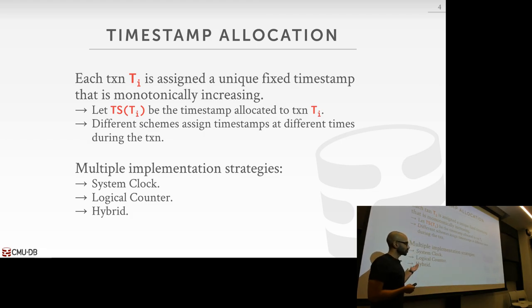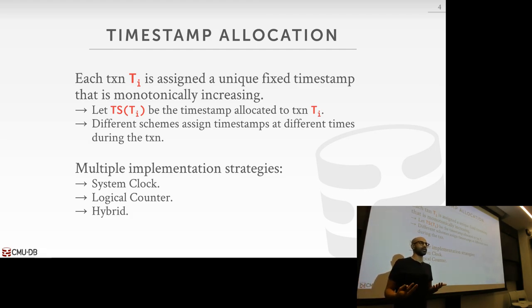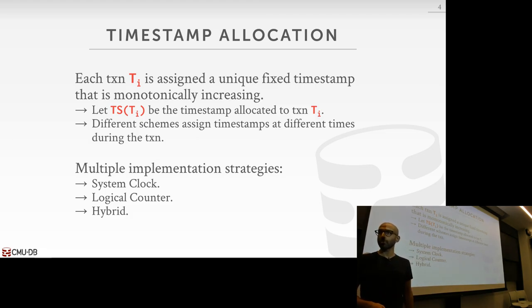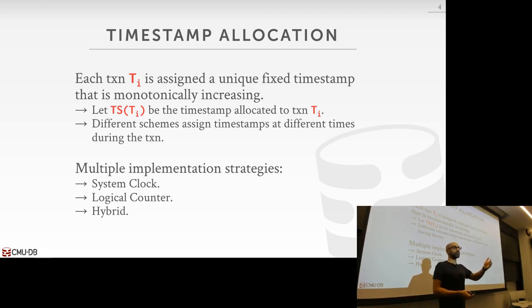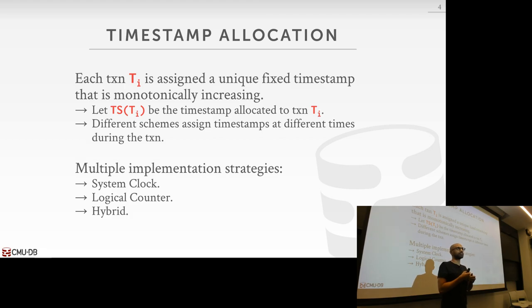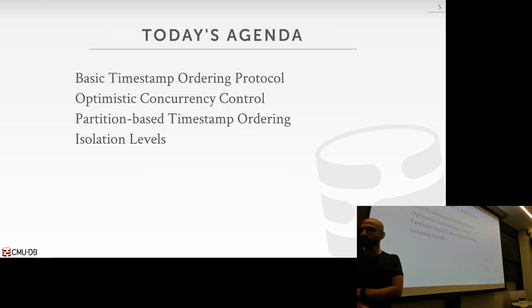Most systems actually use a hybrid approach that combines both a physical counter and a logical counter to ensure everything works correctly. Recapping: the system clock has the daylight savings problem — when daylight savings occurs, time moves back an hour, making timestamps non-monotonic.